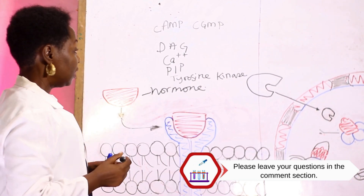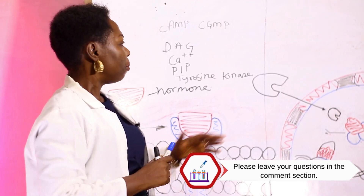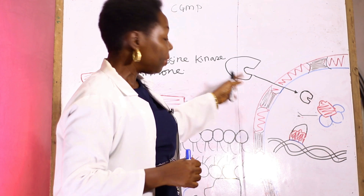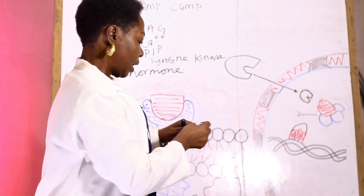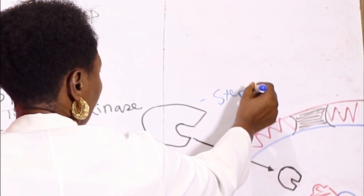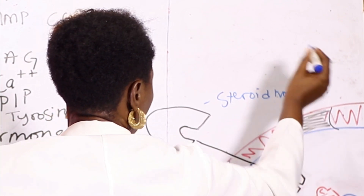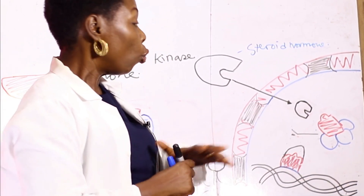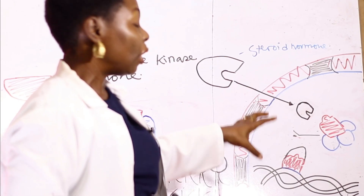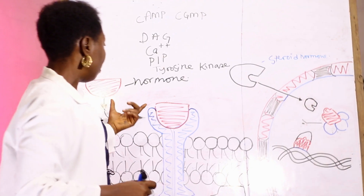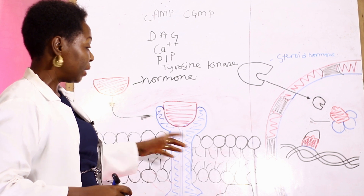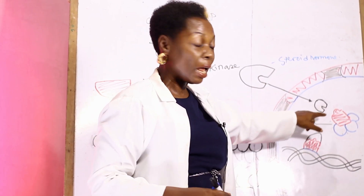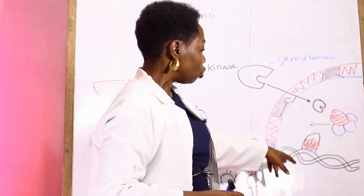Now we move on to the primary messengers. These are steroid hormones. Because they are lipid in nature, they can transcend the cell membrane. What happens is that the steroid hormone transcends the cell membrane and forms the hormone-receptor complex within the cell, while the other class of hormones form the hormone-receptor complex outside the cell membrane.